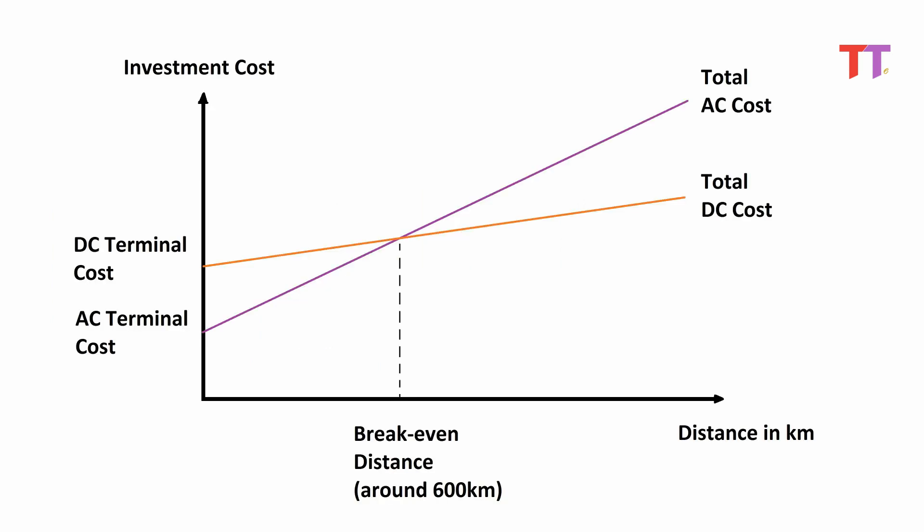Considering the capital cost and for better understanding of the economics of both systems, let's see the graph. HVAC transmission cost and HVDC transmission cost are plotted against distance of transmission lines in kilometers. As shown in the graph, up to the break-even point at around 600 kilometers, cost of HVDC transmission is higher than that of HVAC. Whereas after 600 kilometers, cost of HVAC transmission is higher than that of HVDC. Hence for transmission beyond 600 kilometers, HVDC transmission system is more economical.